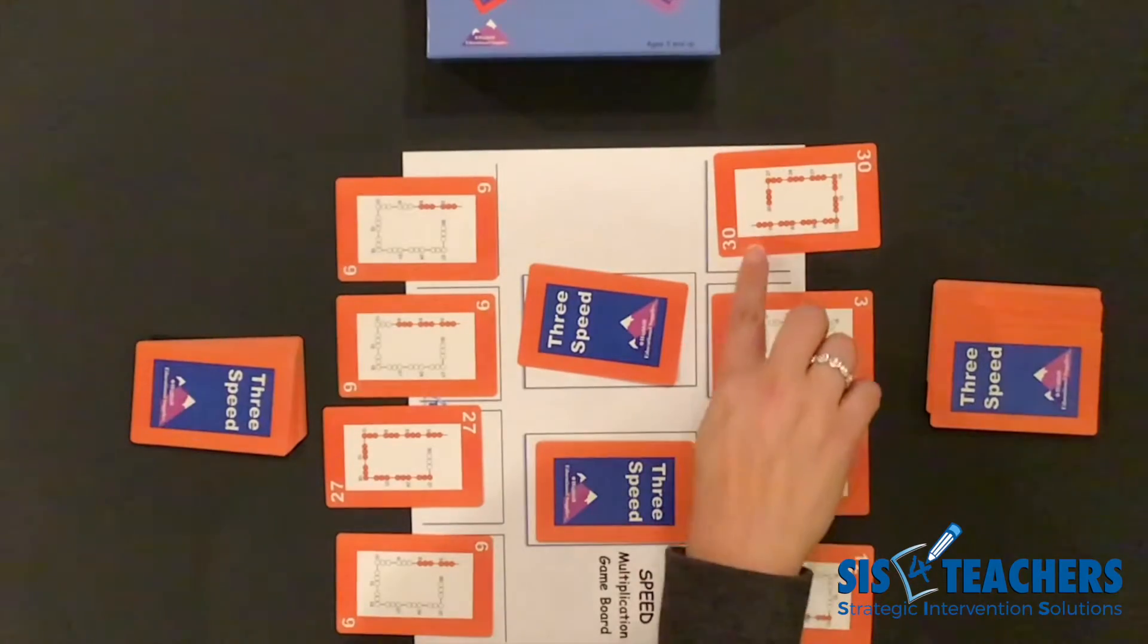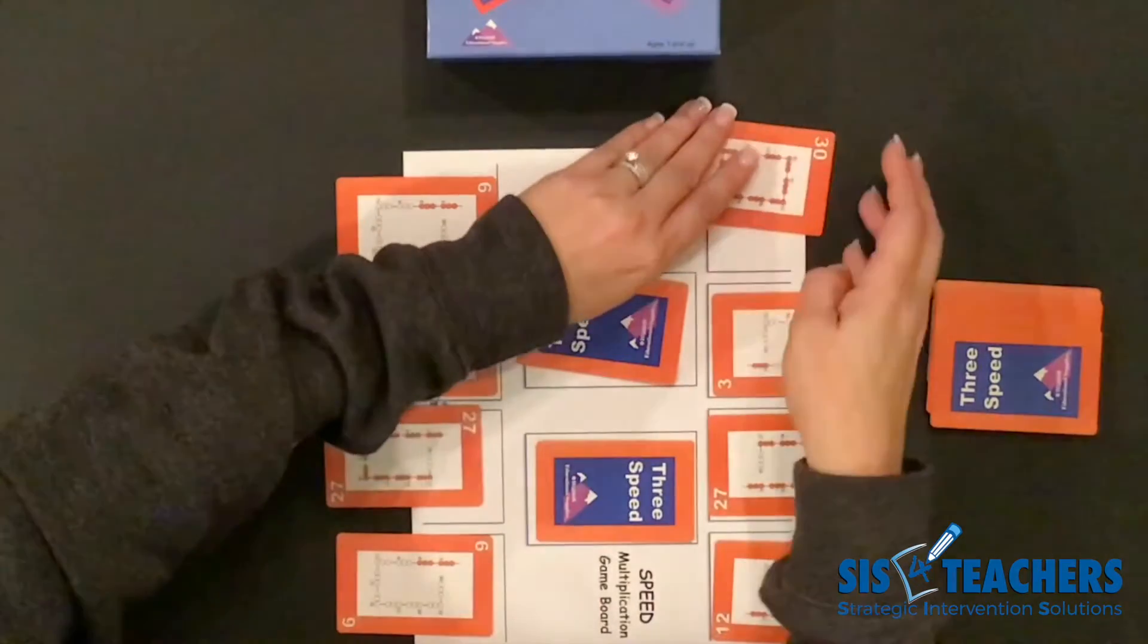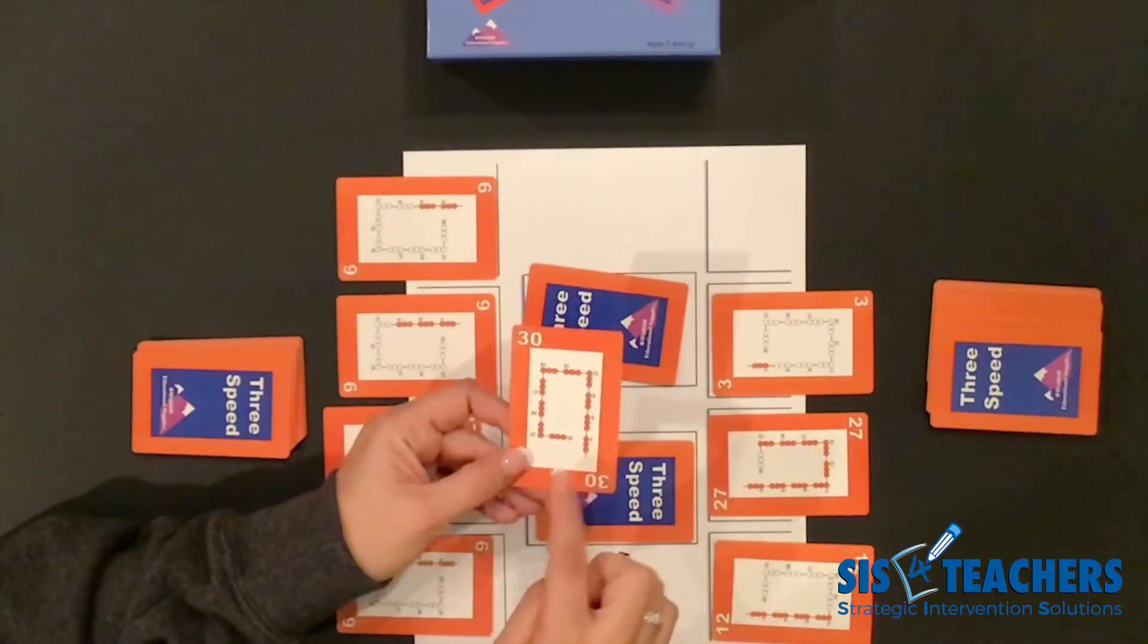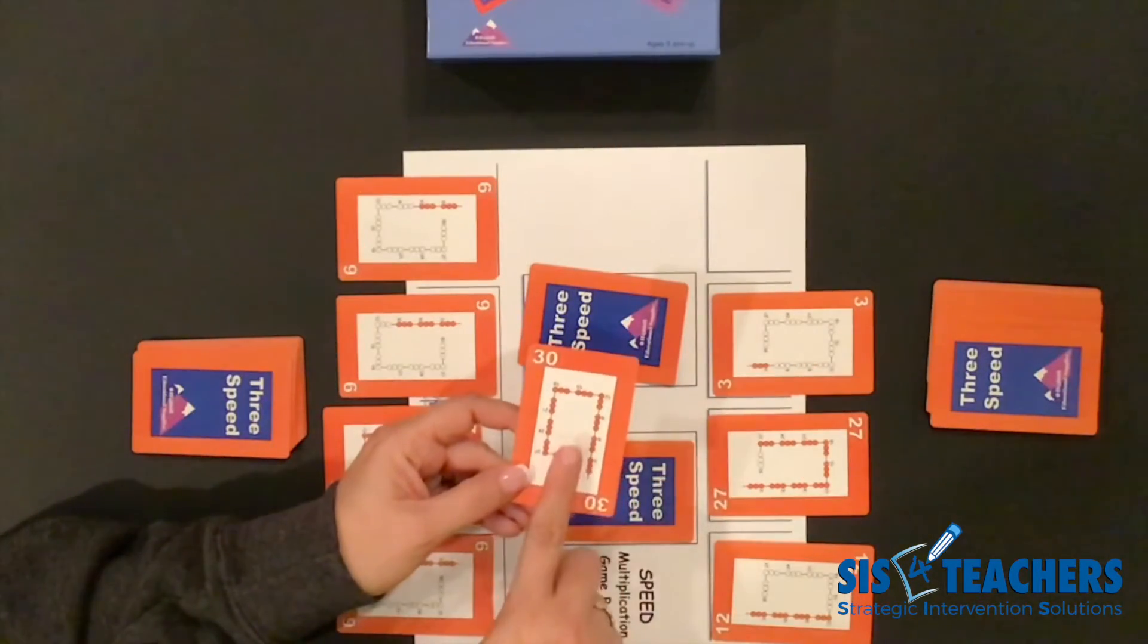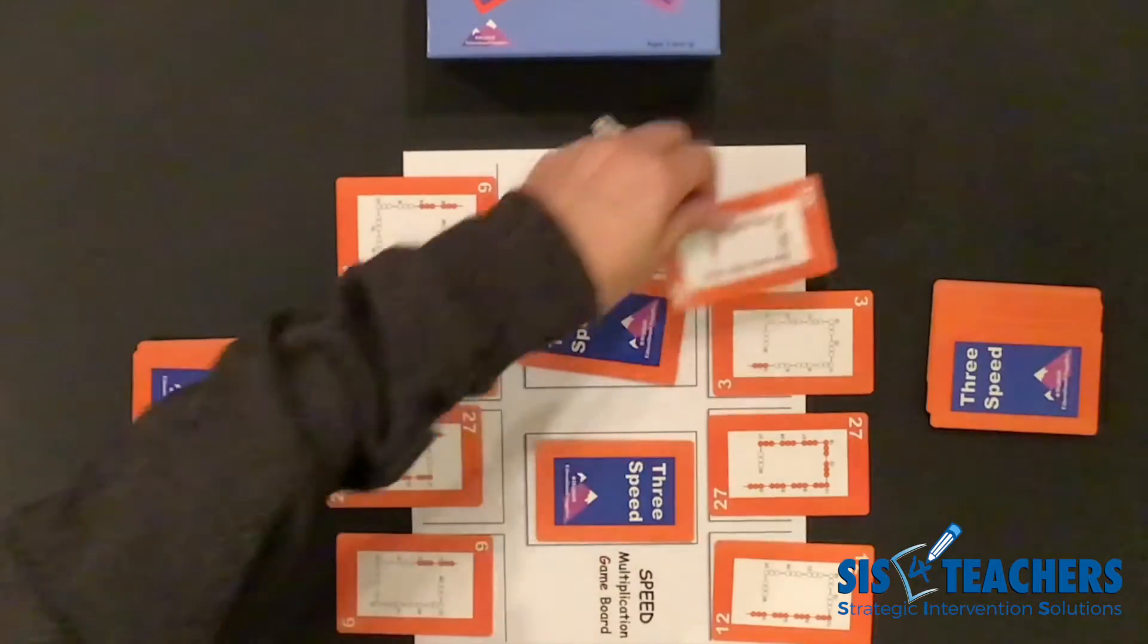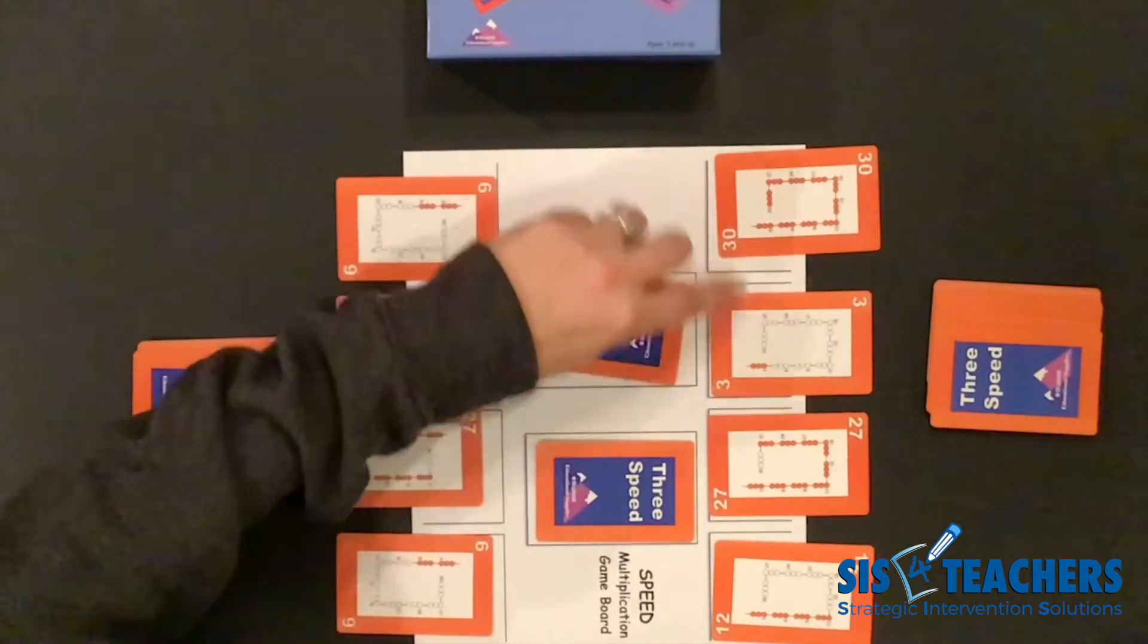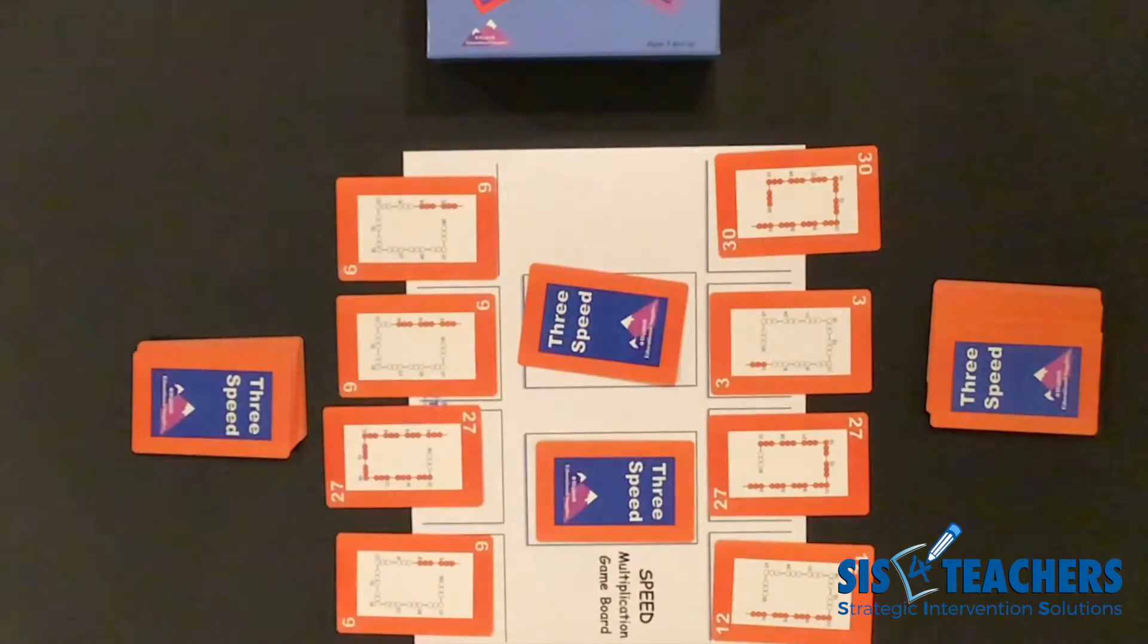One thing we want to remember in the game of speed is if 30 is selected, this card here makes it wrap around to the number three. So if a 30 is up, you can either start over and go to three or go back to 27. Same thing is if a three is placed, you can put a 30 on it and go back by three or you can go up by six.